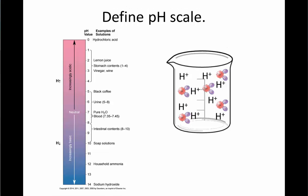Down below neutral, we can see that as we move increasingly basic, we have intestinal contents that are pH of 8 to 10, soap solutions at 10, household ammonia, a cleaner, all the way down to 14, where we have sodium hydroxide, basically a pure base that you might find in a lab.